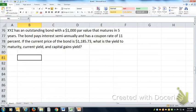XYZ has an outstanding bond with a $1,000 par value that matures in five years, pays interest semi-annually based on a coupon rate of 11%. If the current price of the bond is $1,185.73, what is the yield to maturity, current yield, and capital gains yield?